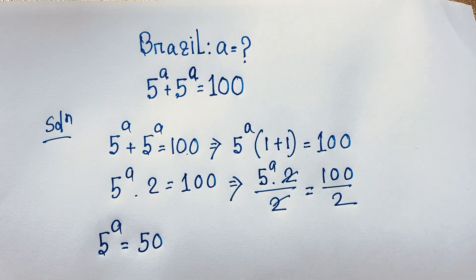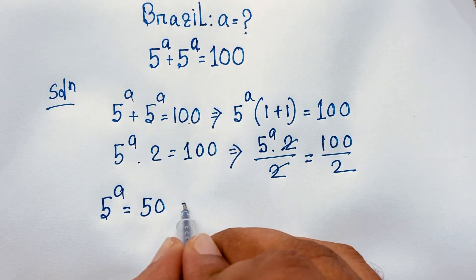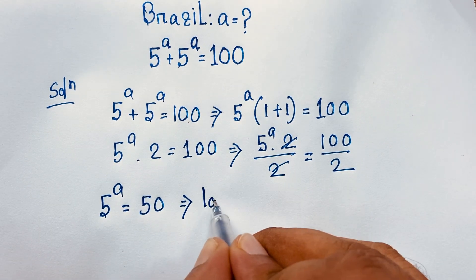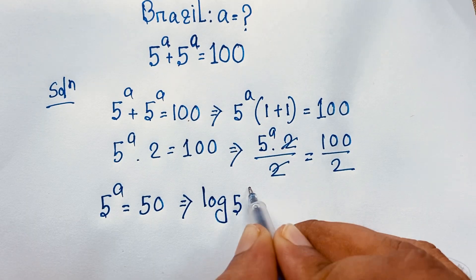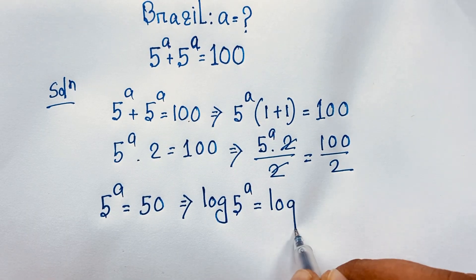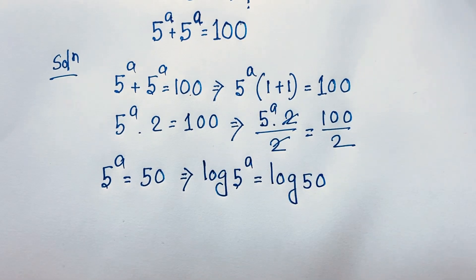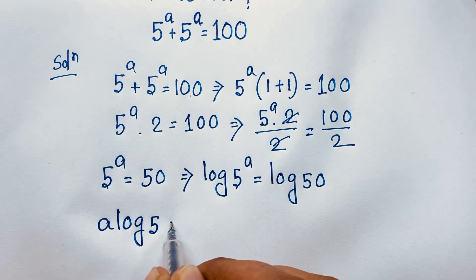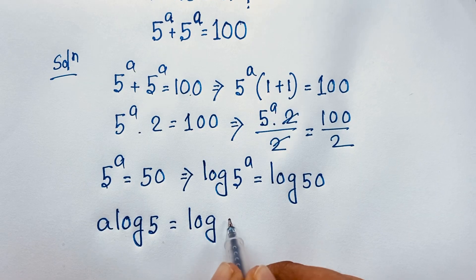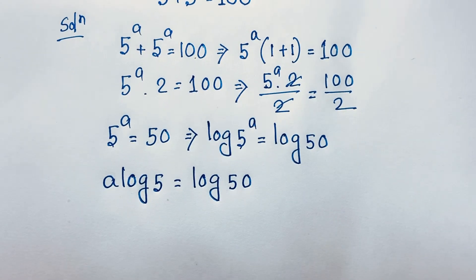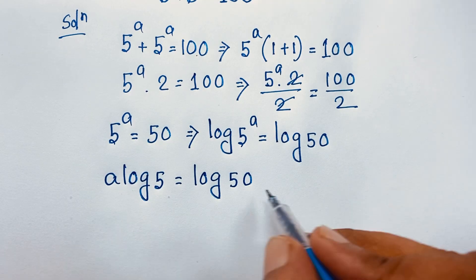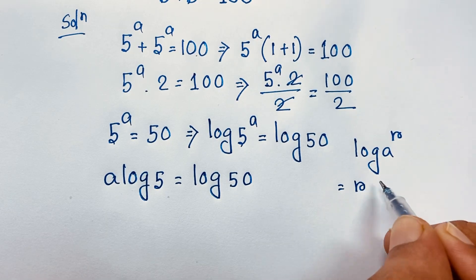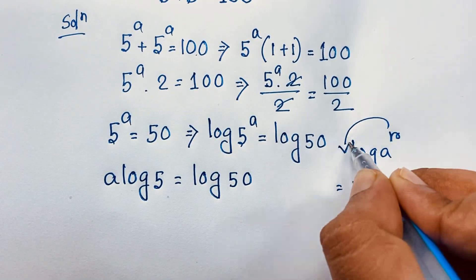So we are finding out a nice exponential math problem — how to solve for a. So I use natural log on both sides. Log of 5 to the power a is equal to log 50. Then this a moves to the front. So it will be a log 5 is equal to log 50. I apply the math formula: log a to the power r is equal to r log a.